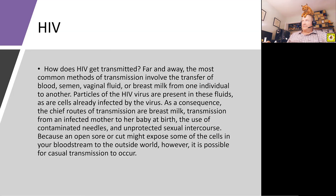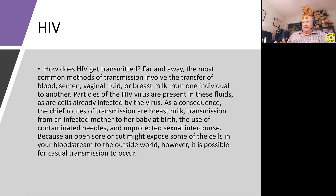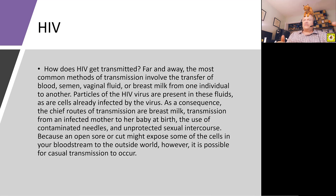HIV — the most common methods of transmission involve blood, semen, vaginal fluid, and breast milk. You don't have AIDS if you have the HIV virus. You could have a high viral load of HIV particles in your blood but not have AIDS. What's truly ugly about this virus is that it becomes a true pathogen when it mutates and can now recognize yet another type of receptor.